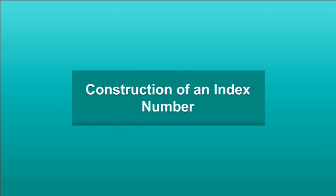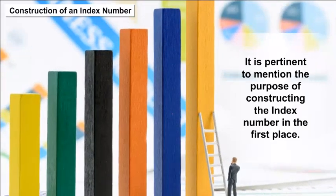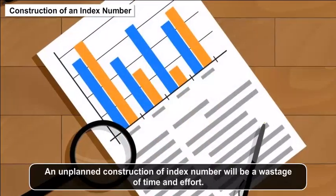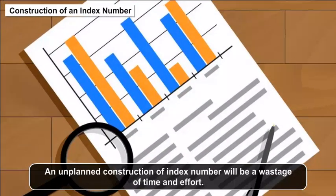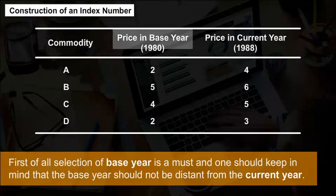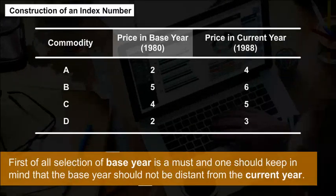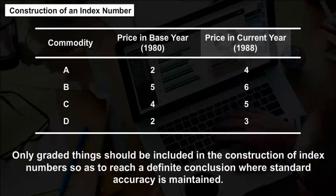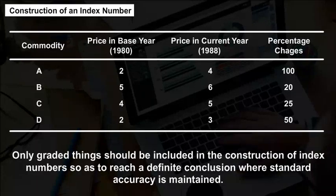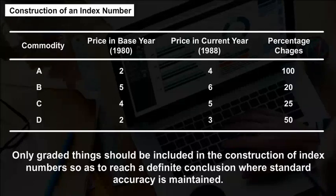Construction of an Index Number: It is pertinent to mention the purpose of constructing the index number in the first place, as an unplanned construction will be a wastage of time and effort. First of all, selection of base year is a must, and one should keep in mind that the base year should not be distant from the current year. Only graded things should be included so as to reach a definite conclusion where standard accuracy is maintained.